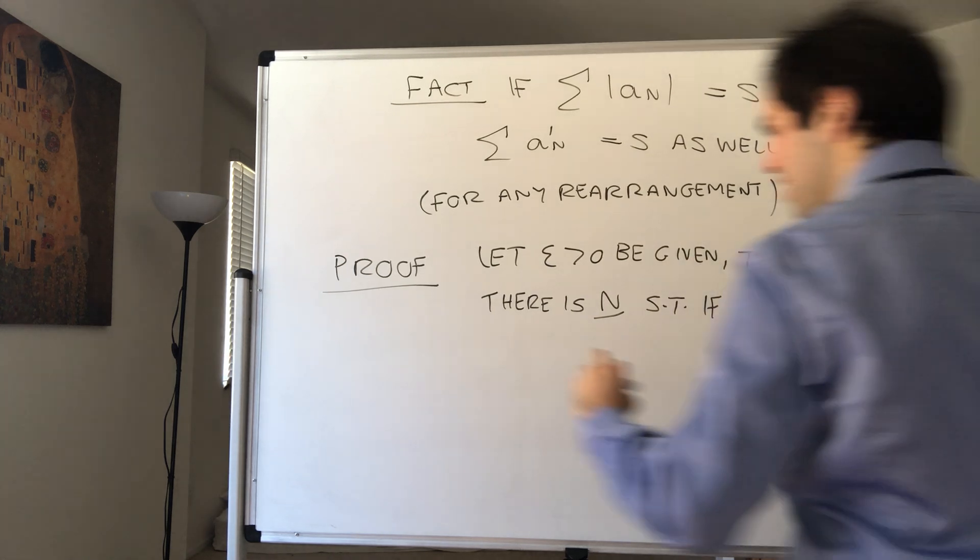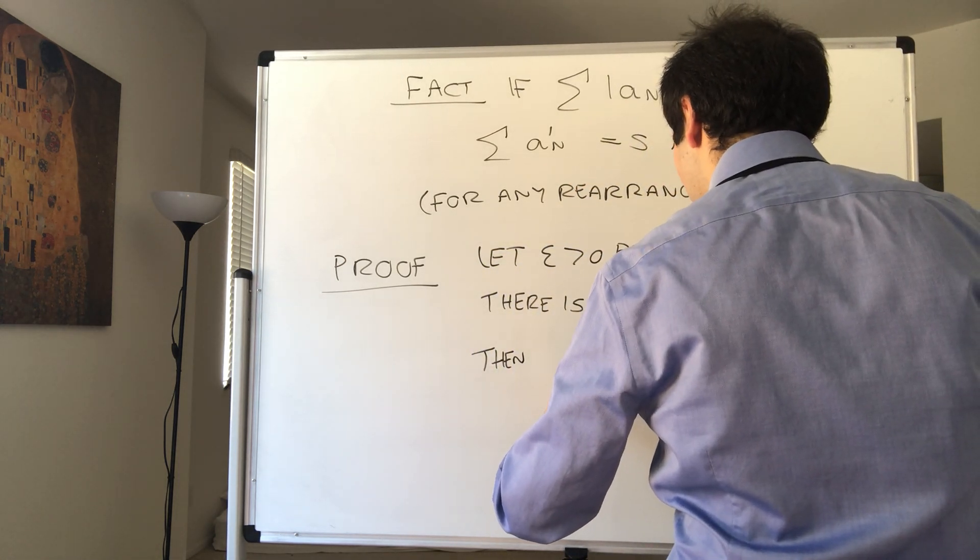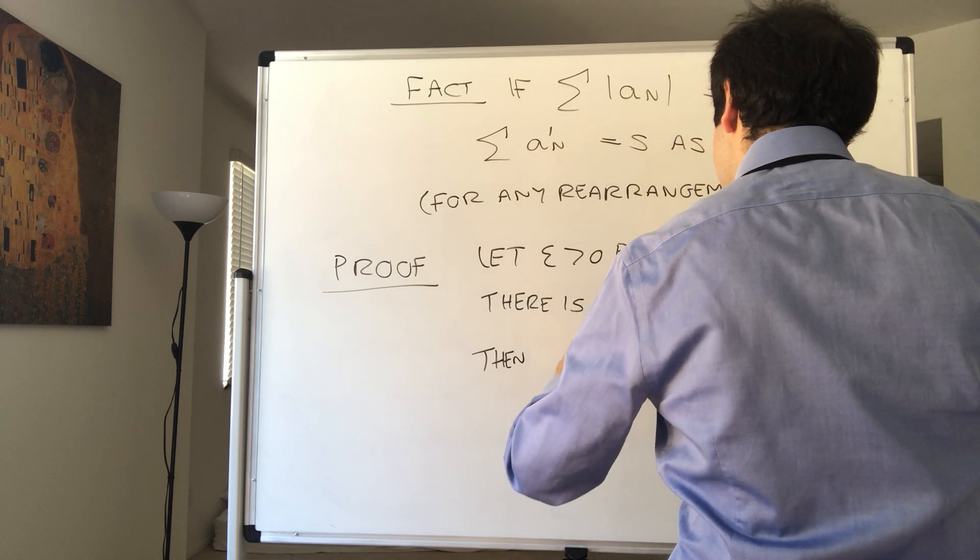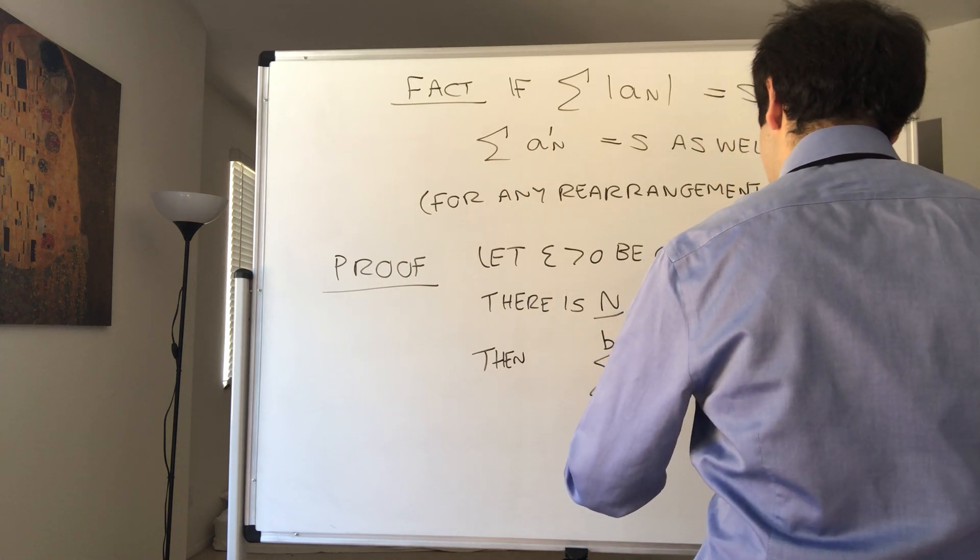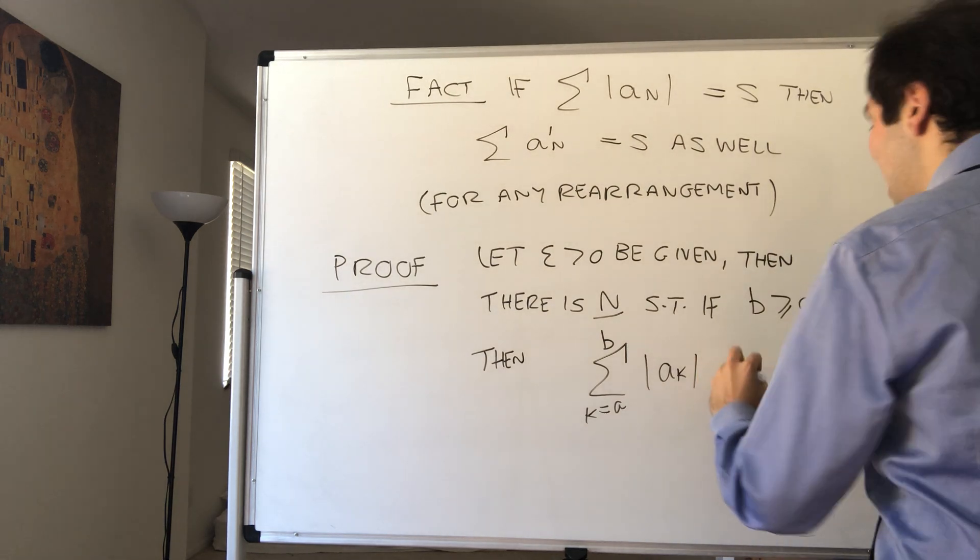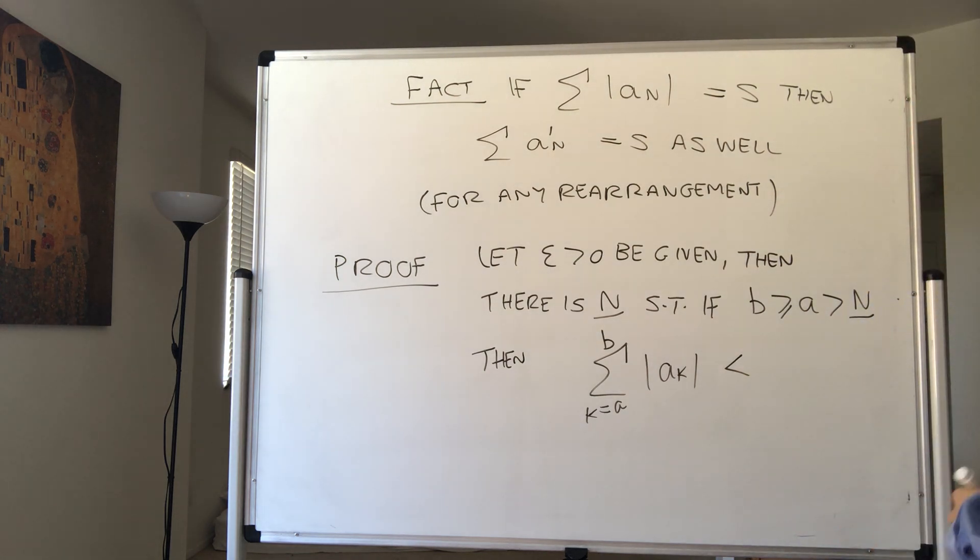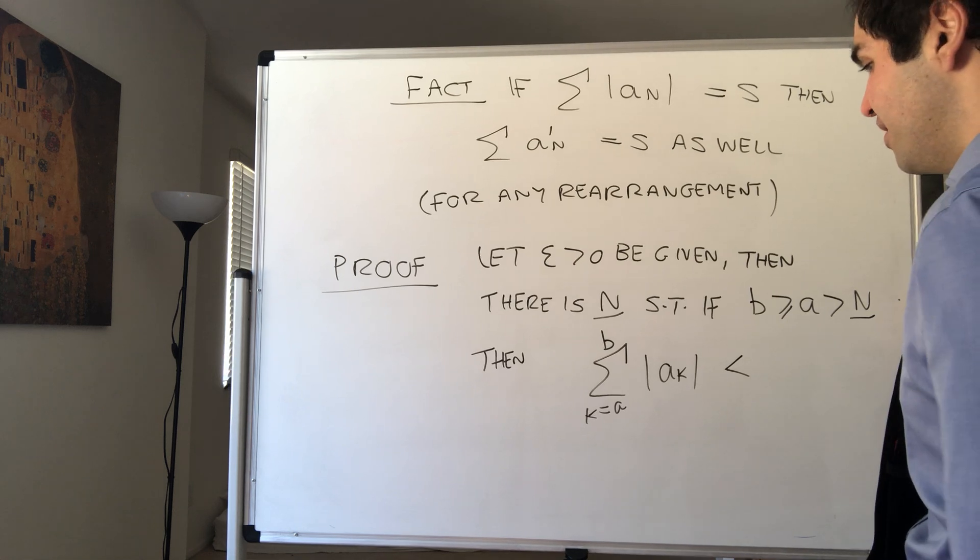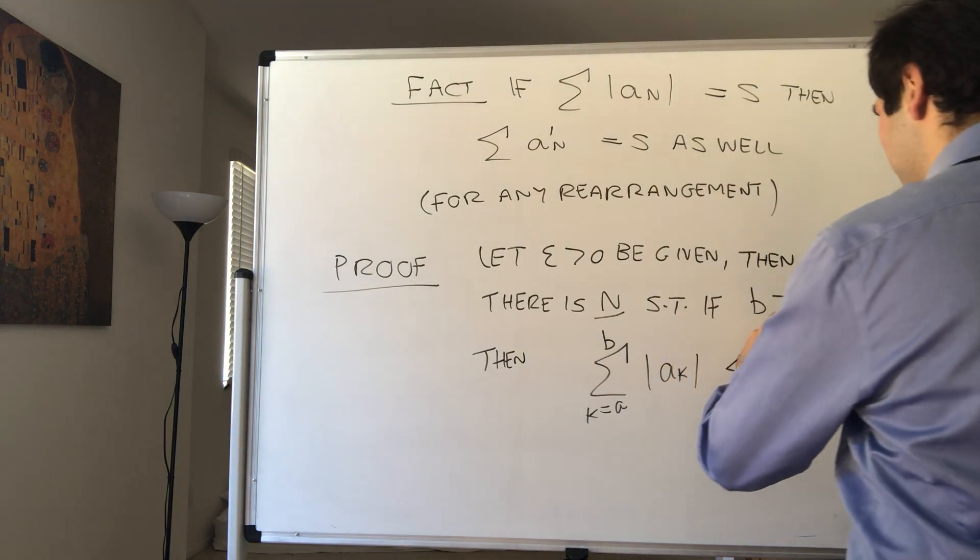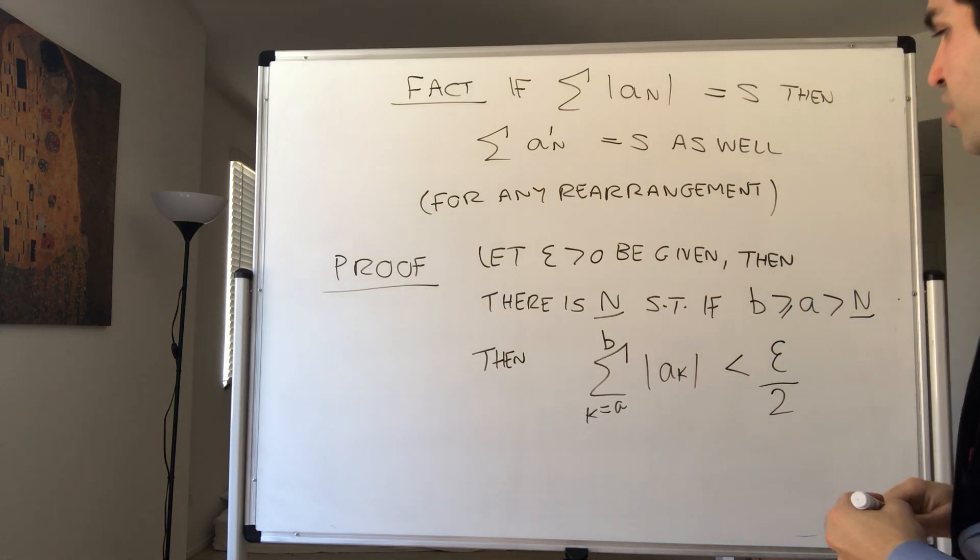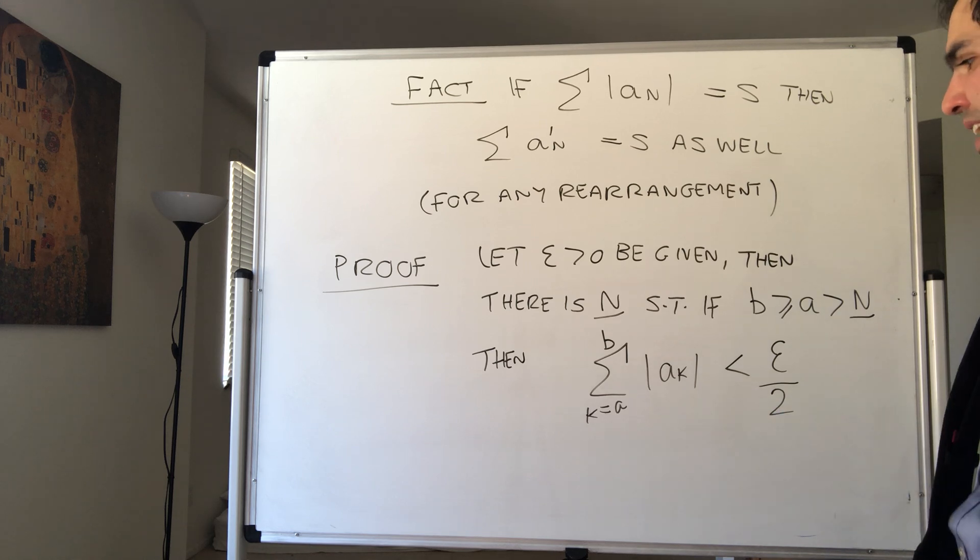Since this series converges absolutely, there is capital N such that if b is greater or equal to a is bigger than capital N, then the tails of the series, sum from k from a to b of |A_k|, is less than epsilon over 2. Usually we'll use epsilon, but because there are two terms we'll put epsilon over 2. Here again I just use the fact that this series converges.